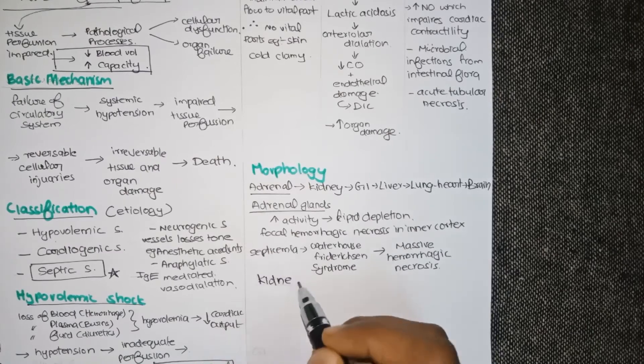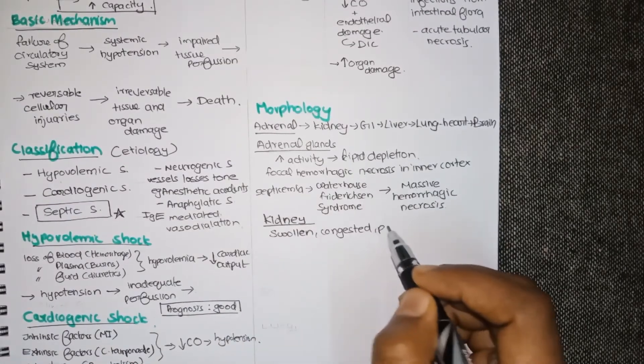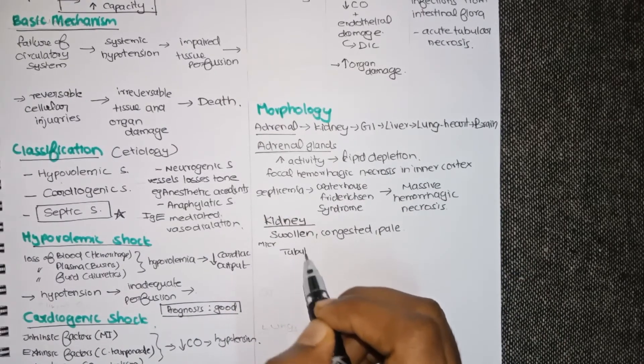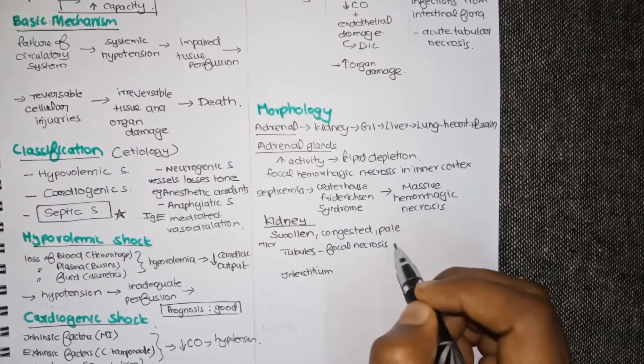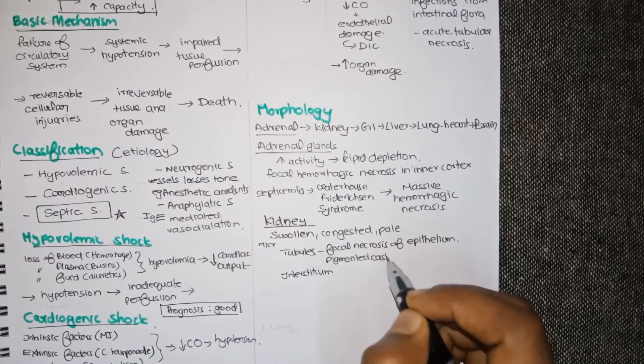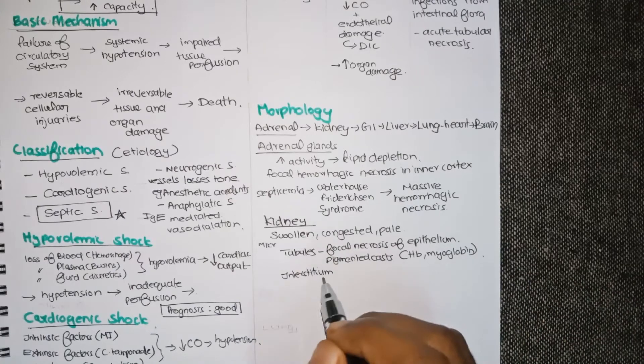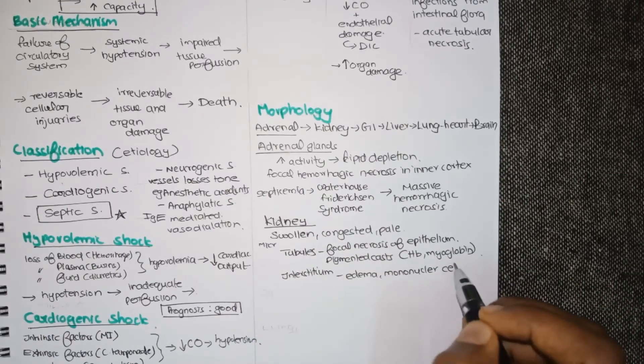Kidneys, grossly they will be seen swollen, congested and pale. Coming to the microscopy explained under tubules and interstitium. In tubules there will be focal necrosis of the epithelium. There shall also be pigmented casts containing hemoglobin and myoglobin. In interstitium there is edema as well as mononuclear cells.